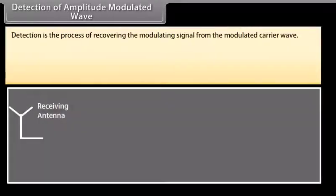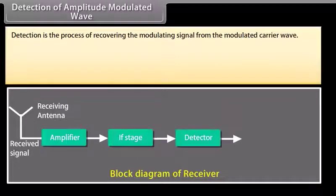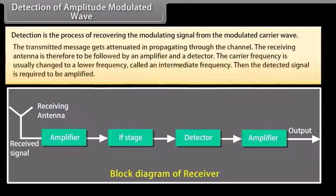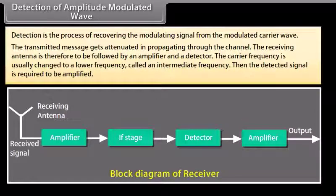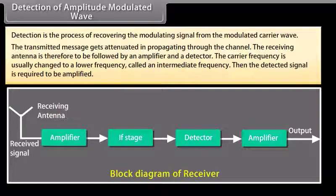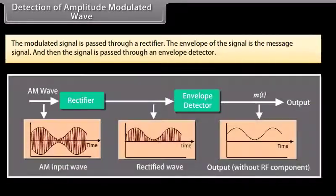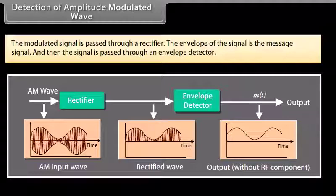Detection is the process of recovering the modulating signal from the modulated carrier wave. The transmitted message gets attenuated in propagating through the channel, so the receiving antenna is followed by an amplifier and a detector. The carrier frequency is usually changed to a lower intermediate frequency, and the detected signal is then amplified. The modulated signal is passed through a rectifier; the envelope of the signal is the message signal, which is then passed through an envelope detector.